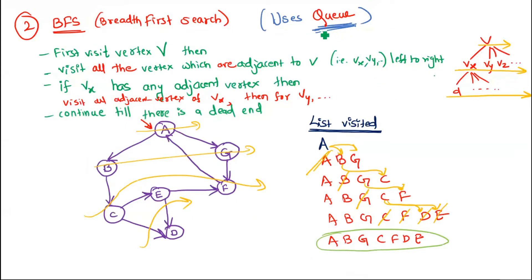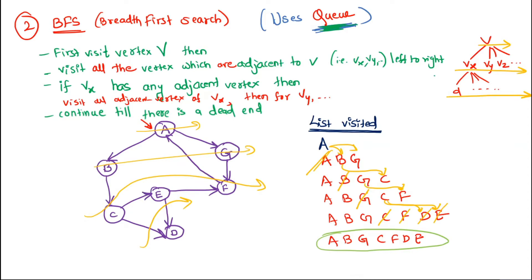The data structure used for BFS is a queue. In BFS (breadth first search), we first visit any vertex V, then we try to visit all its adjacent vertices. After visiting all adjacent vertices of V, we pick one adjacent vertex, visit all its adjacent vertices, and continue until the end of the graph.